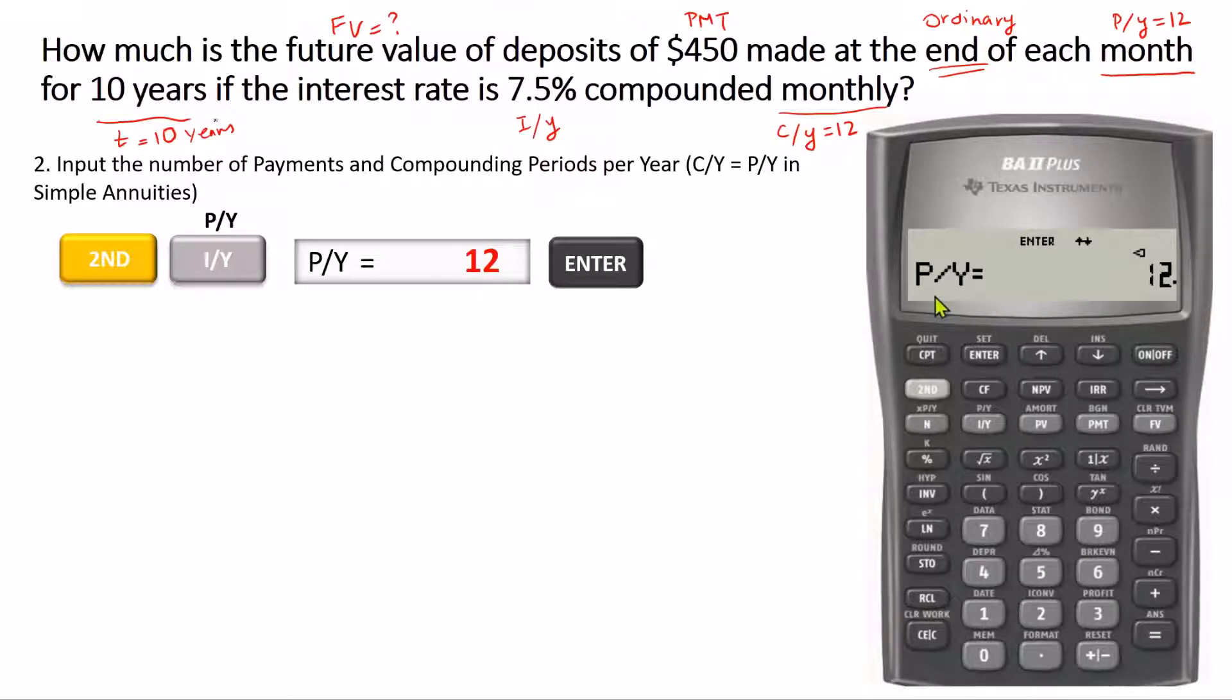You can double check by using the down arrow here and see that C/Y is also 12. So for simple annuities, these two numbers are exactly the same. For general annuities, however, we need to change C/Y after changing P/Y.